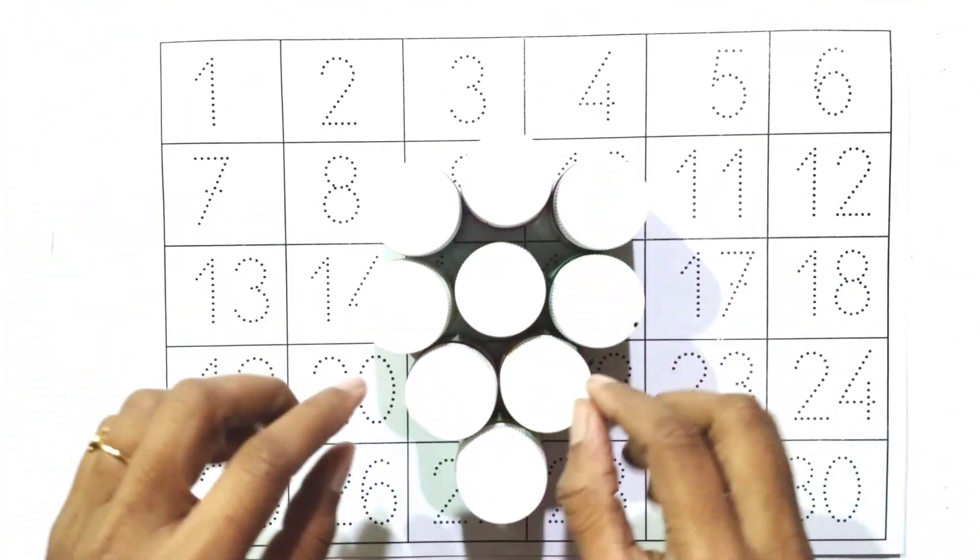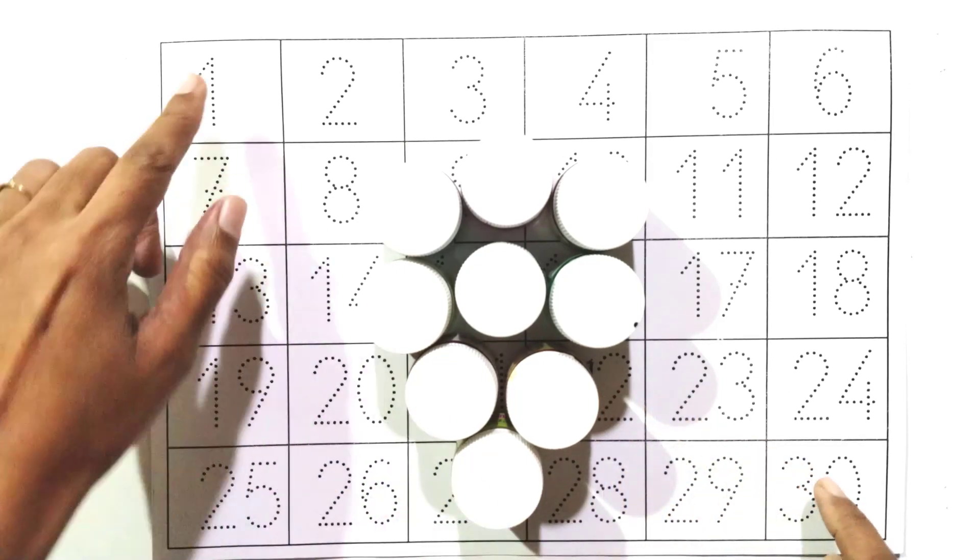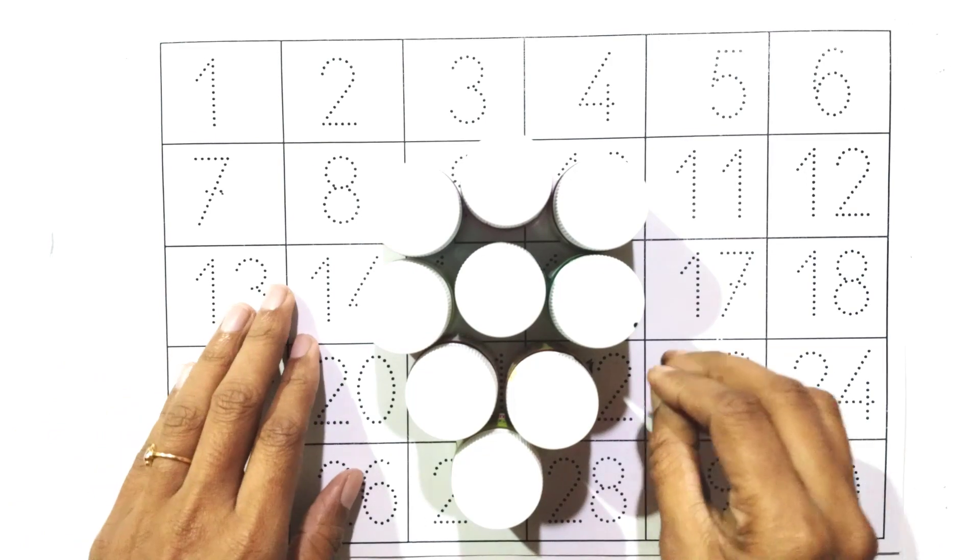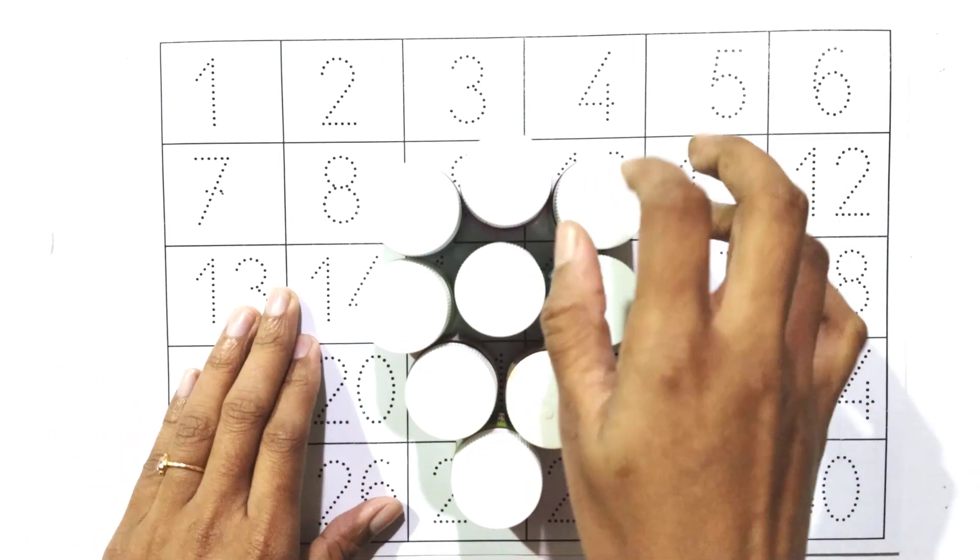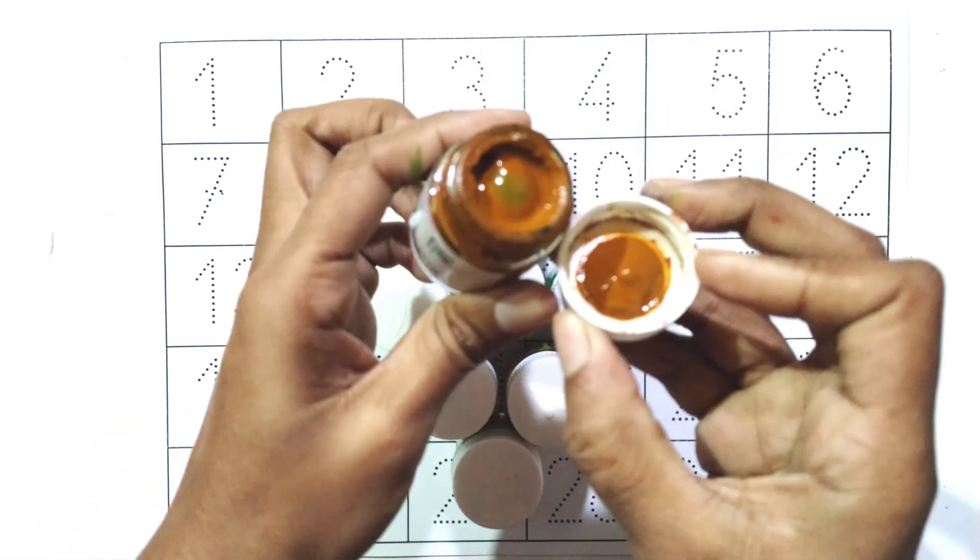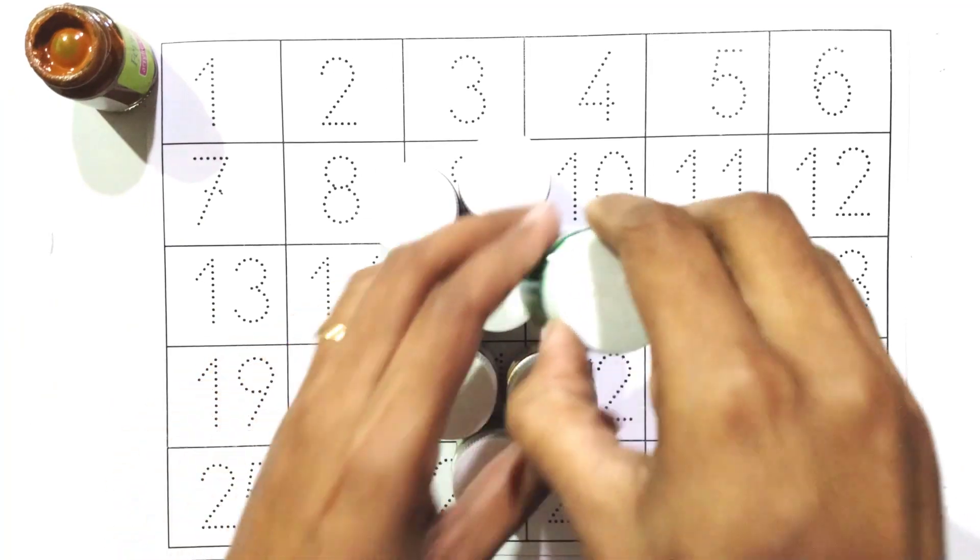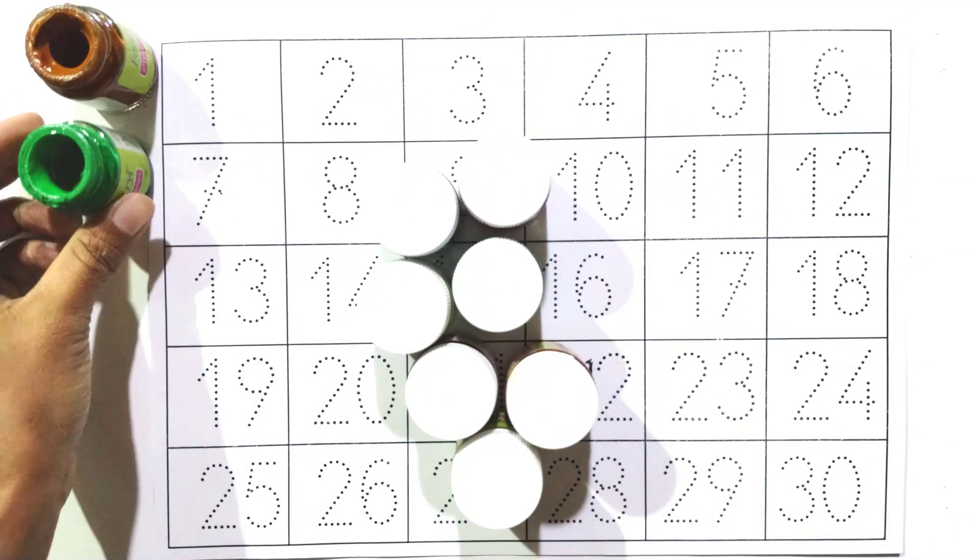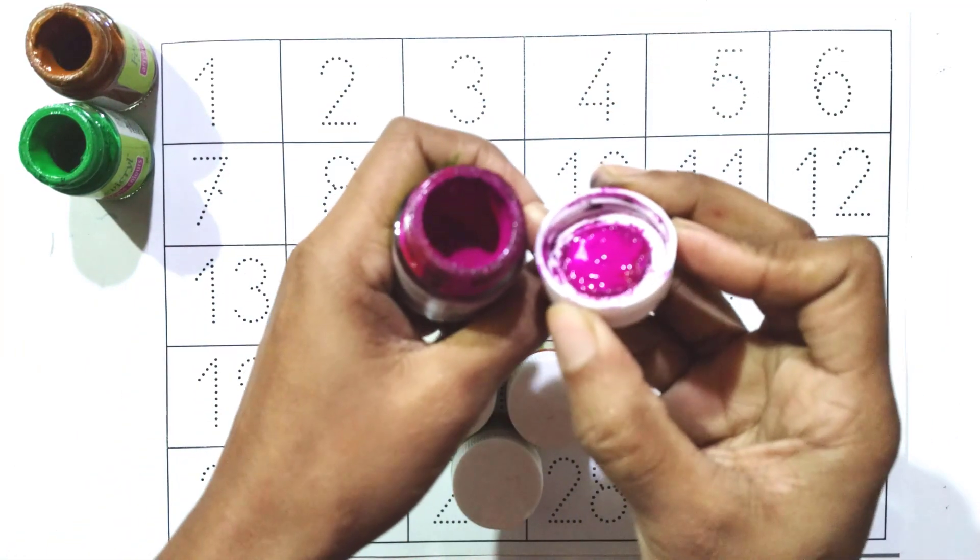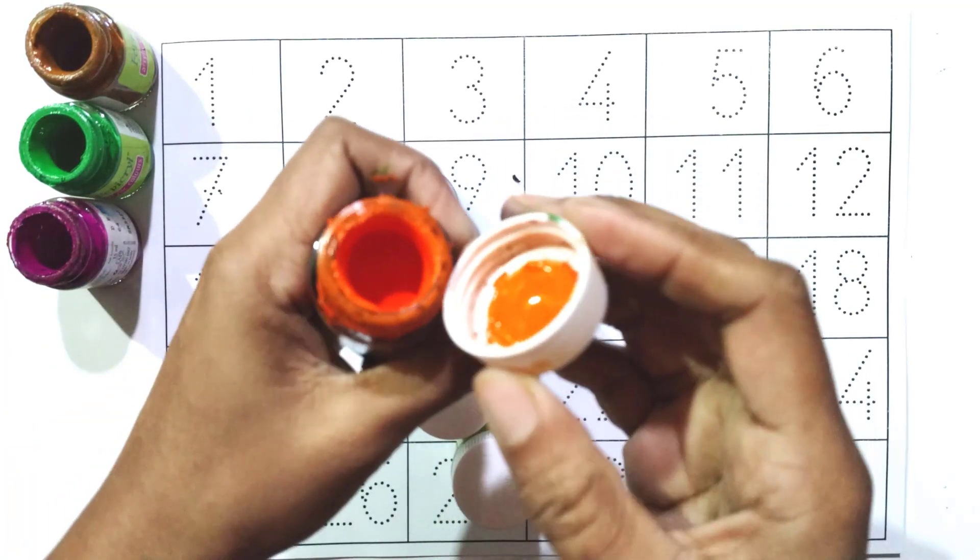Hello kids, today we will learn colors name and counting numbers. At first, say with me colors name: brown, green, pink, orange.